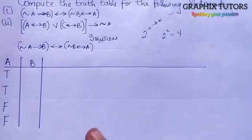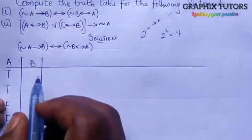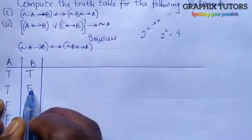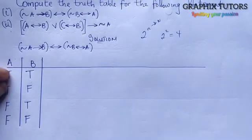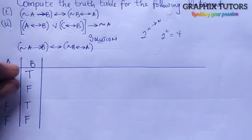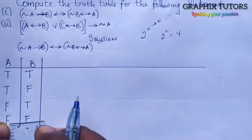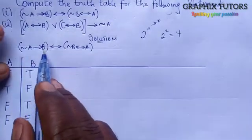For A we have: true, true, false, false. For B, we alternate one by one starting with true: true, false, true, false. Now the next thing is how many columns we have. Since I've taken A and B, the next columns will be negation A implies B, then negation B by-implies A, and finally the full expression: negation A implies B, by-implies negation B implies A.